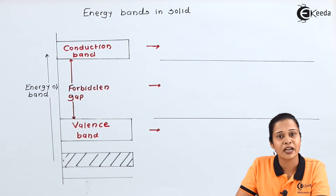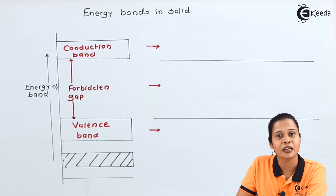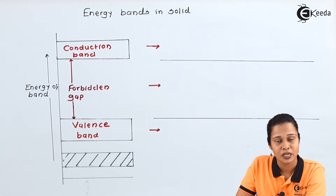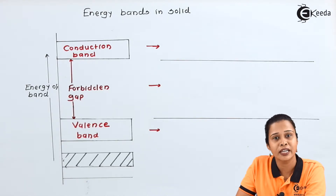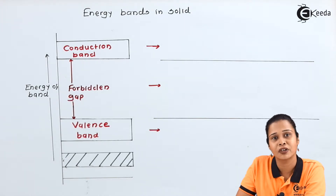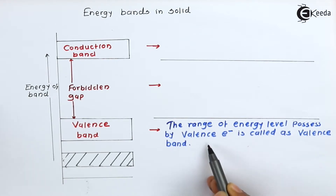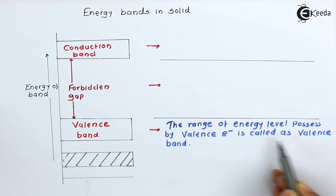Now we will see energy bands in solids. We know in an atom there are electrons, and electrons present in the valence orbit are called valence electrons. When we are talking about an isolated atom, we have only one energy level, but when atoms come together in a solid, we have a combination of energy levels. The combination of all valence electron energy levels forms a valence band. The range of energy levels possessed by valence electrons is called the valence band.